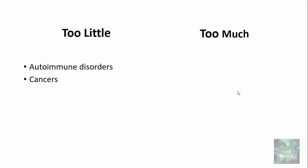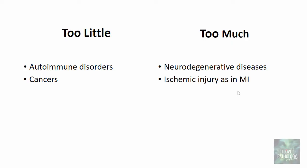When there is too much apoptosis, it means increased apoptosis leading to excessive cell death. This can be in the form of neurodegenerative diseases, ischemic injury as in myocardial infarction, and in many viral infections where the death of virus-infected cells is always because of too much apoptosis.